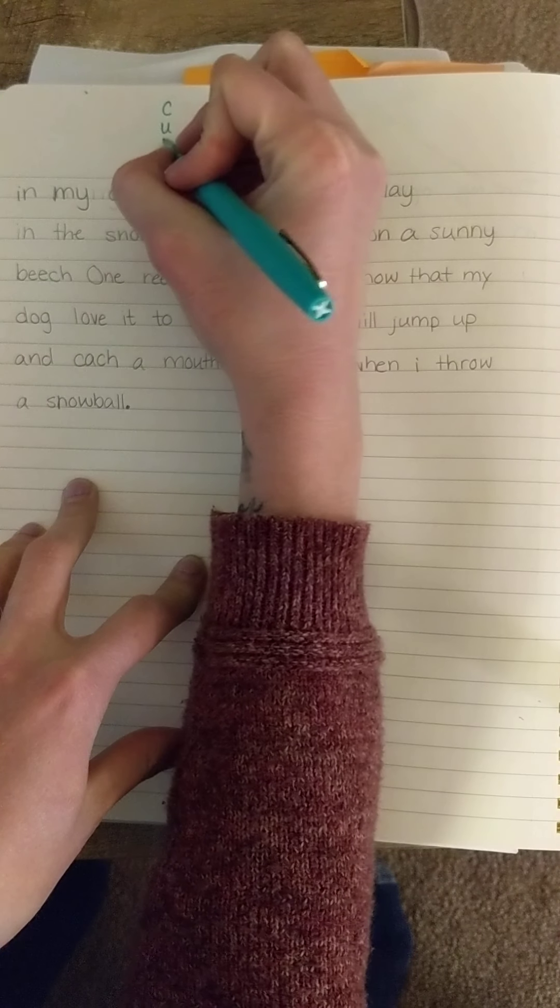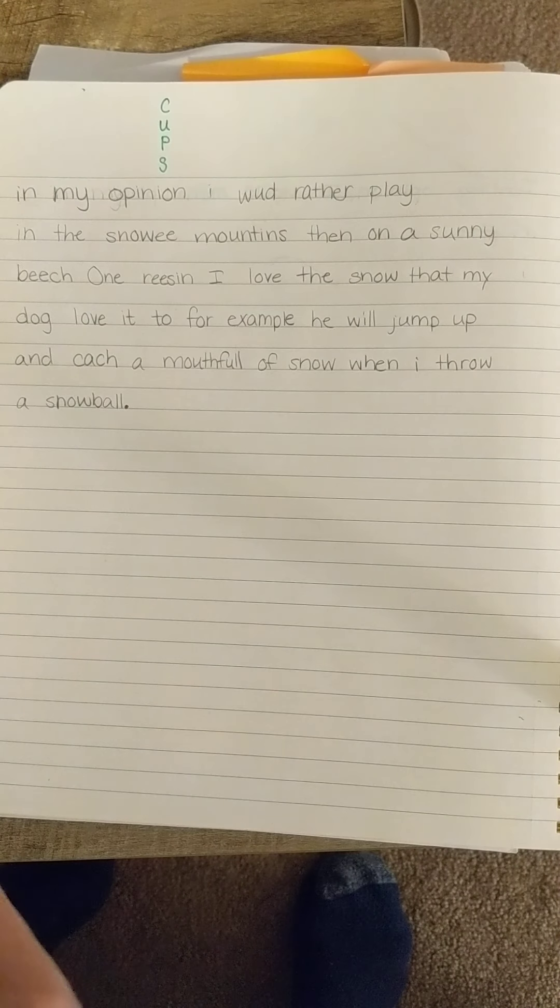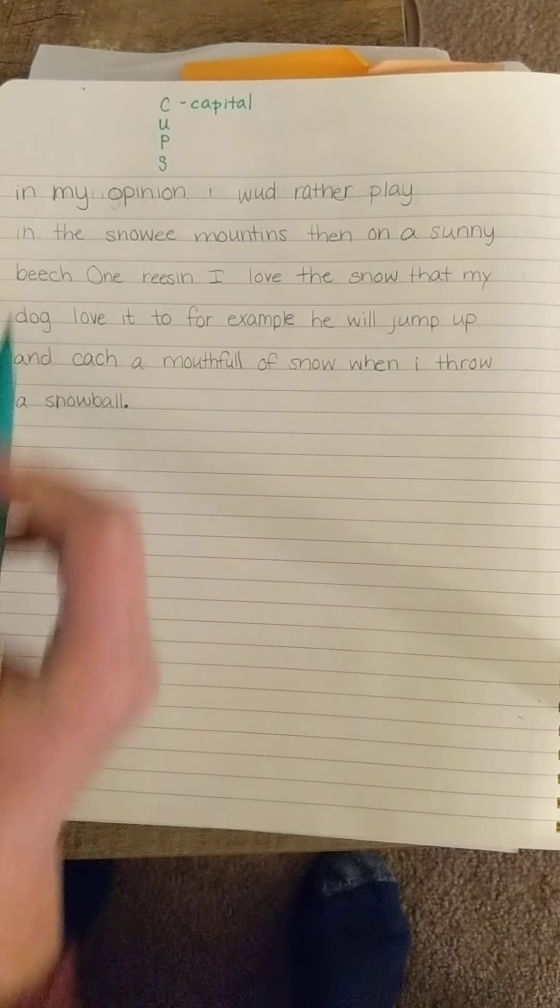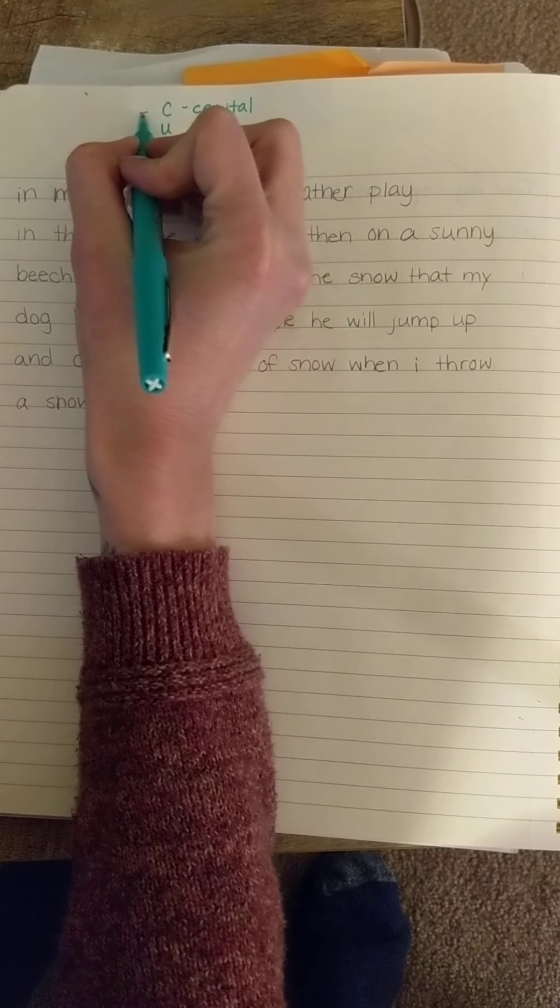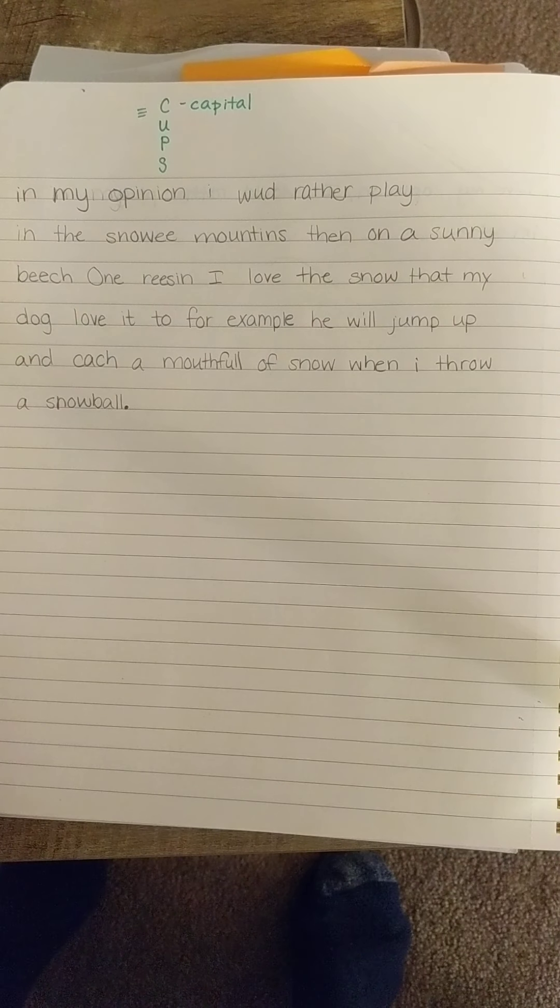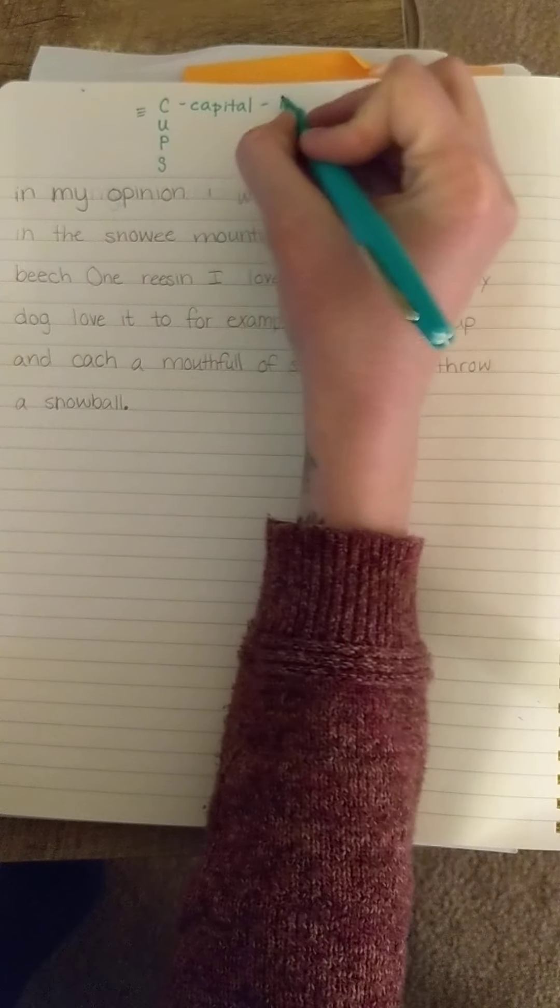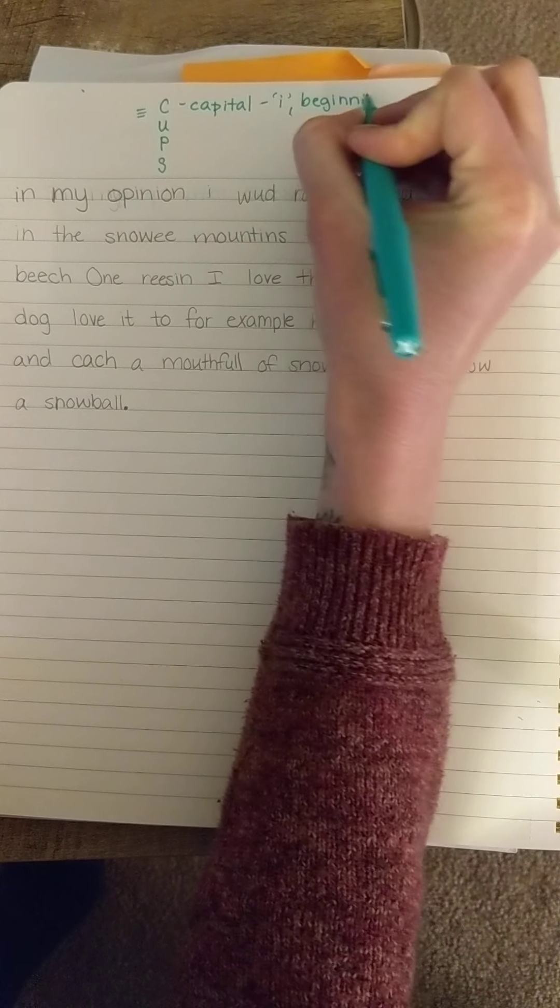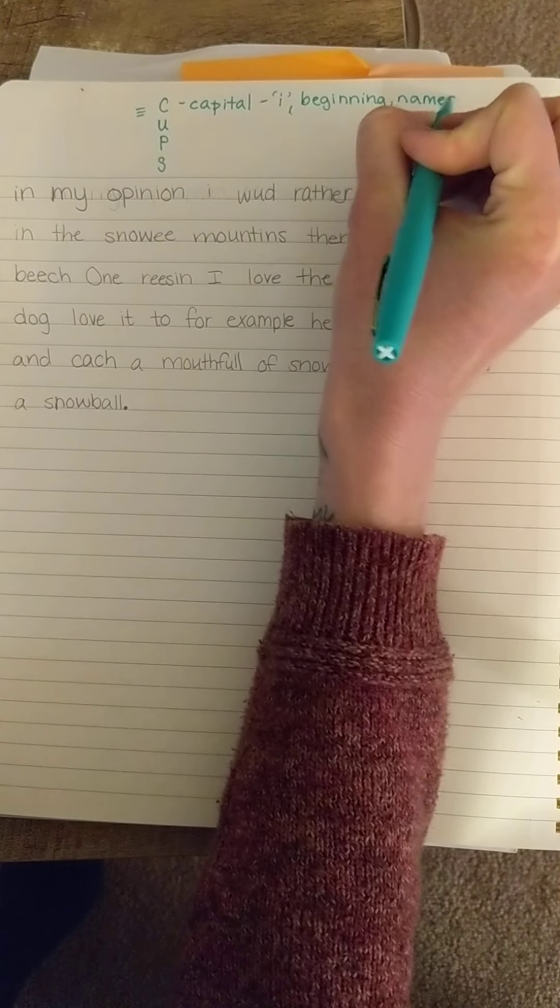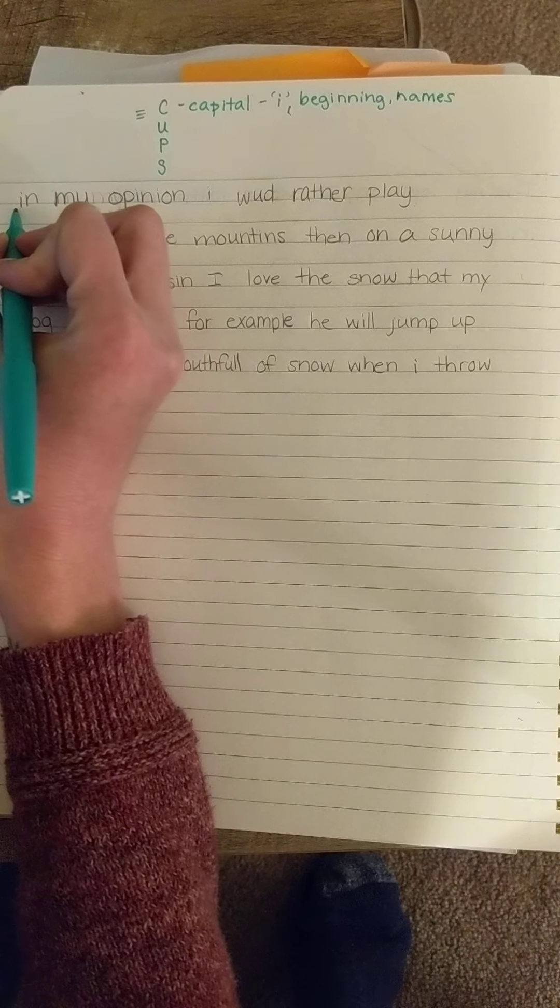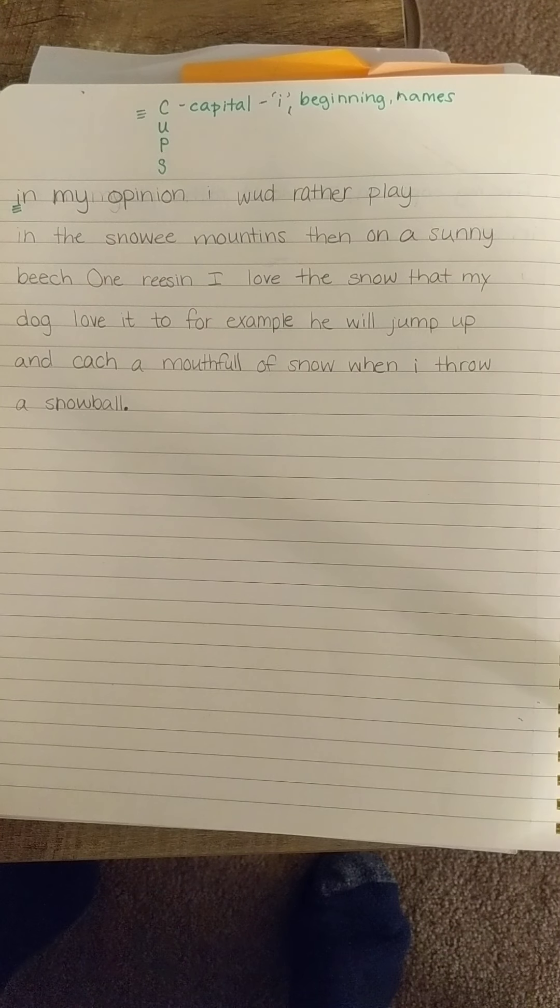We have this word CUPS to remind us that we can start by checking for capital letters. Let's jump in and start with that first. Remember we put three lines underneath the letter that needs to be capitalized and we want to make sure that we also spot if we've used any incorrect capitals in the middle of our sentences. Let's keep going, right here I'm looking at the beginning, oh no, definitely needed to capitalize that because that was the beginning of my sentence.